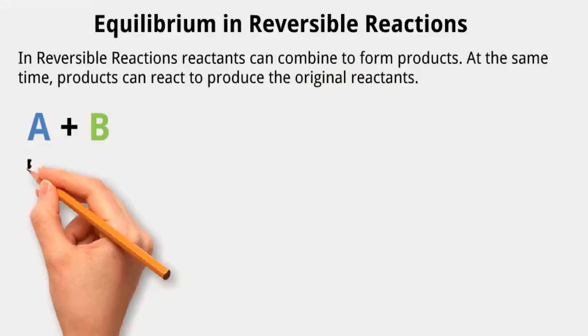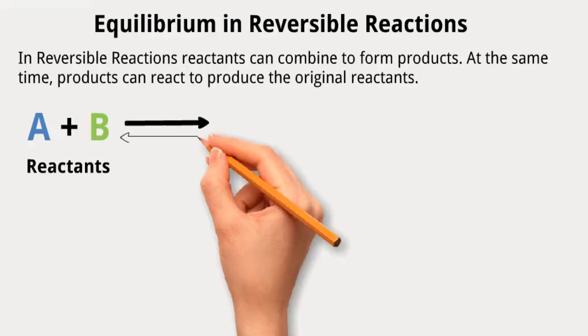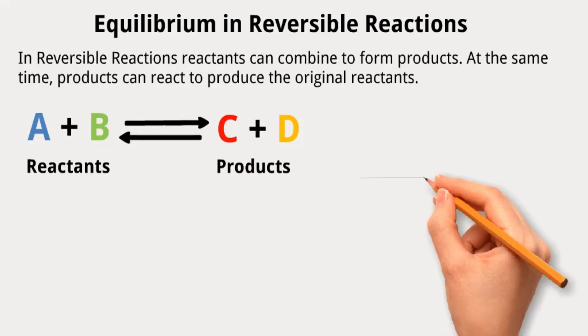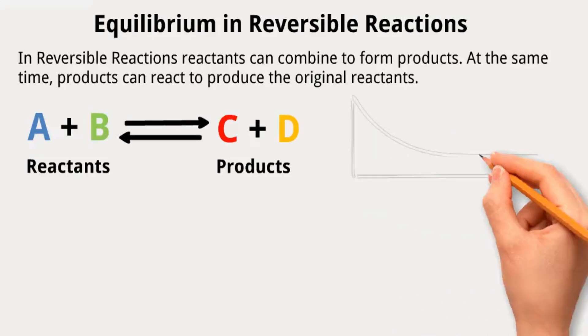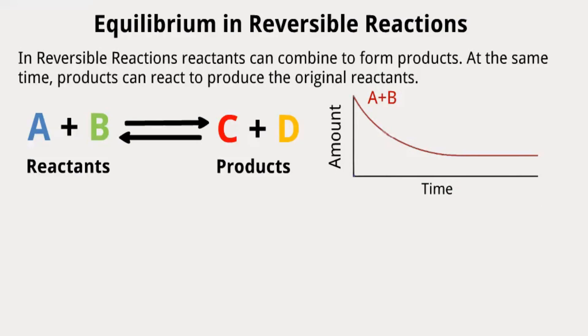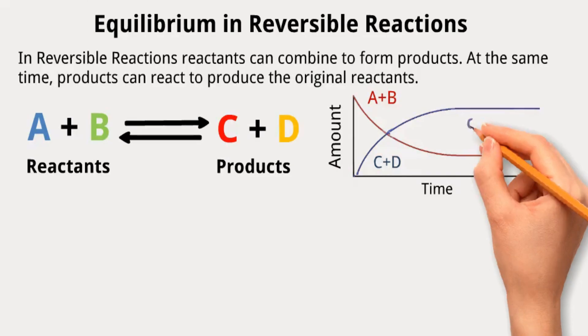Suppose that we have reactants A and B that interact chemically to generate products known as C and D. In this case, when the reaction starts, the amount of A and B will decrease over time, and simultaneously, the amount of C and D will increase. But at some point, the amount of reactants A and B and products C and D will be fixed because they reach chemical equilibrium.